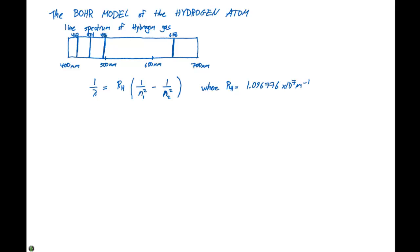In the last video we discussed line spectra. And shown here is the line spectrum of hydrogen gas. And if we look in this line spectrum, to our eyes we're going to see four different lines or four different colors.